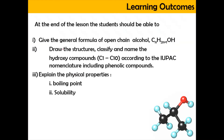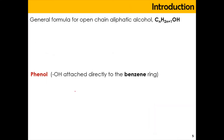In this video, we're going to look into the general formula of open chain alcohol, which has a general formula of CnH(2n+1)OH. We're also going to draw the structure, classify and name the hydroxy compound according to IUPAC nomenclature, including the phenol compound. The general formula CnH(2n+1)OH applies for alcohol which has the open chain — a zigzag pattern with OH attached. For example, ethanol CH3CH2OH has 2 carbons, written as C2H5OH, which applies to this general formula.